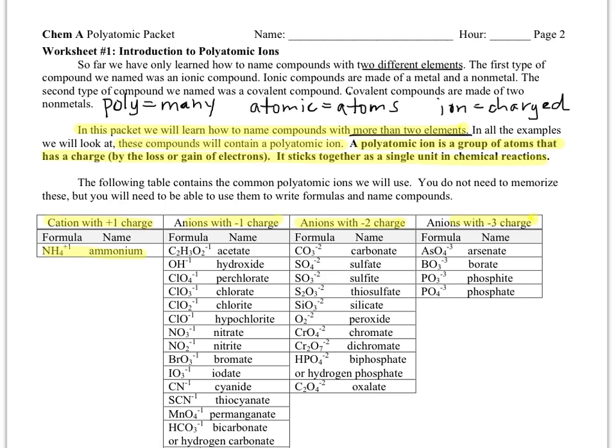And in all of the examples that we look at, what it's going to be is an element combined with something called a polyatomic ion.